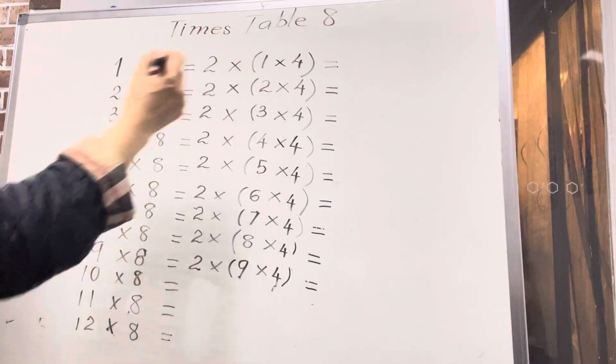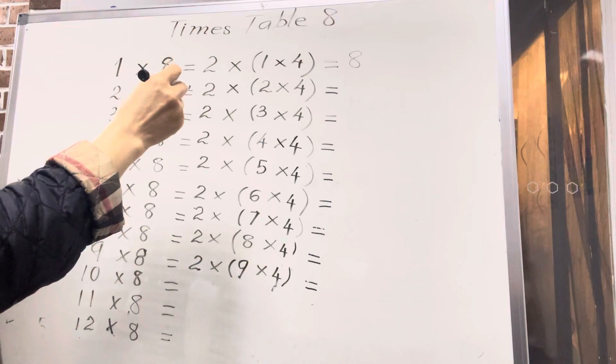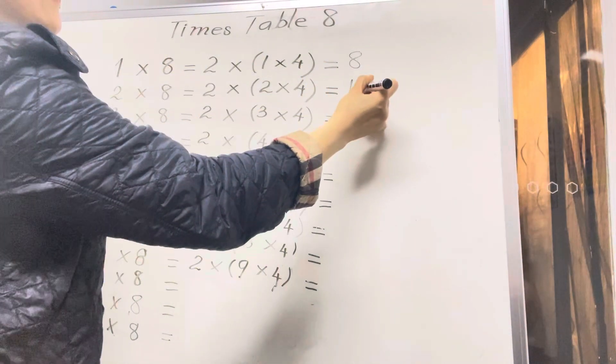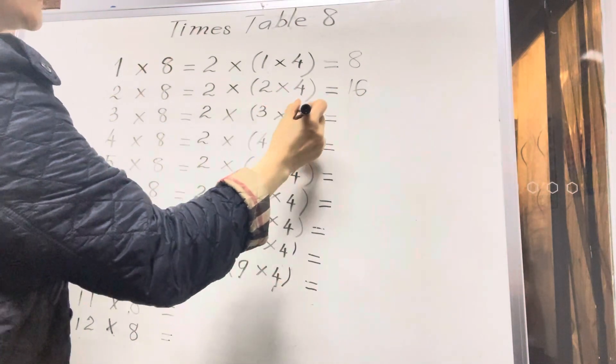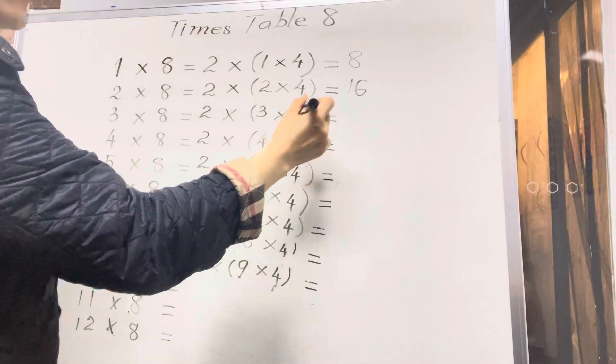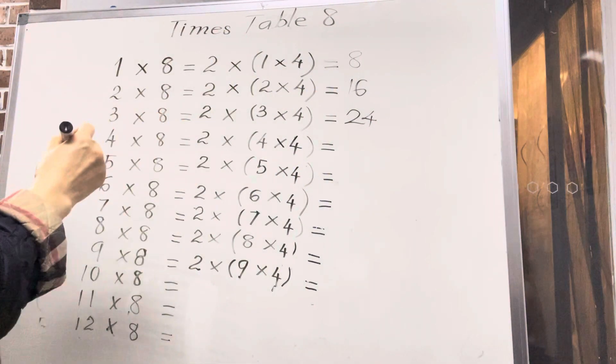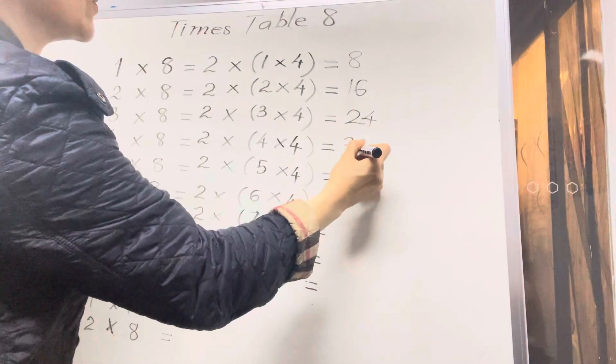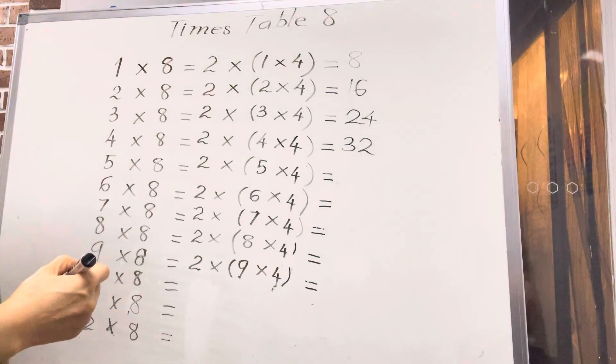Two times eight, sixteen. Three times eight, three times four is twelve, so twenty-four. Yes, double twelve will be twenty-four. Four times eight, thirty-two. Five times eight, forty. Very good.